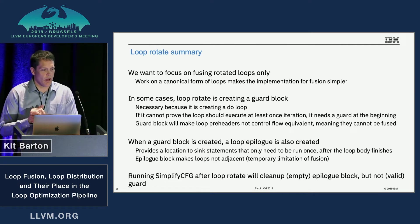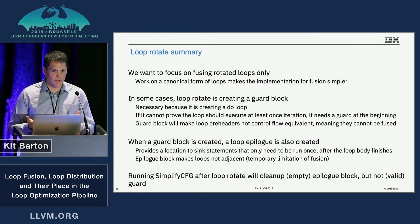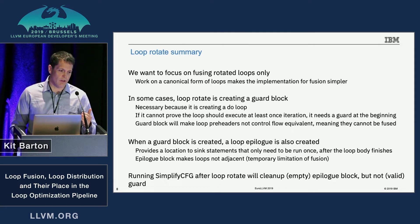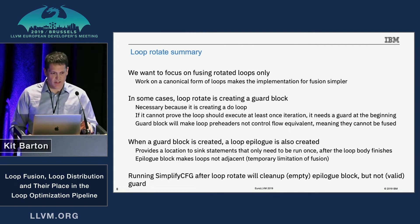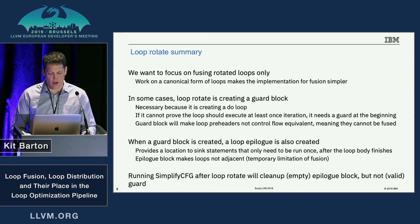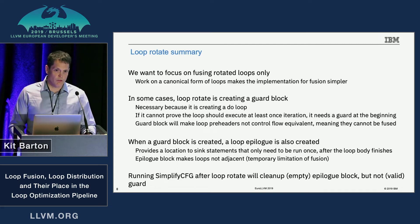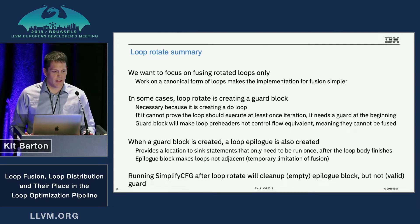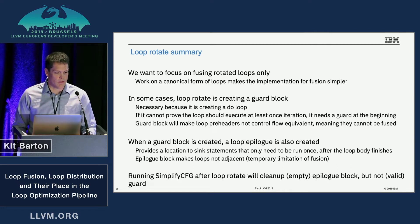To summarize: ideally for fusion we'd focus on rotated loops only, but loop rotation adds complications because it sometimes inserts guard blocks — not always. If the compiler can prove the loop always executes at least once, it removes the guard. We can run simplify-cfg after rotating to get rid of the epilogue block since it's usually empty, but simplify-cfg can't clean up the guard.